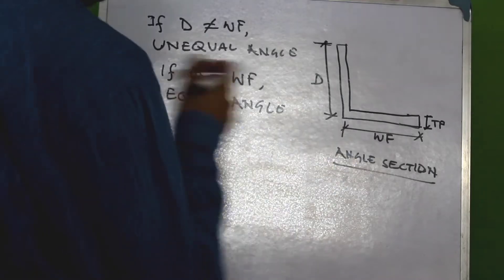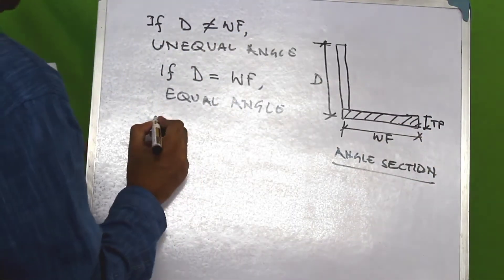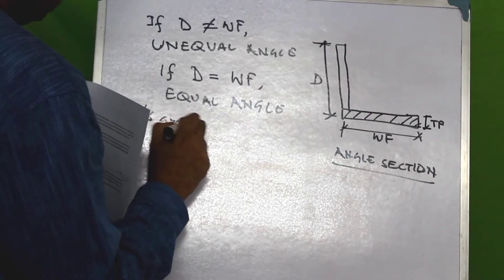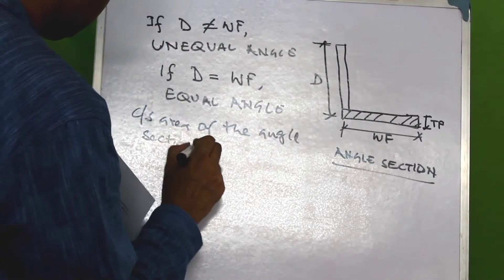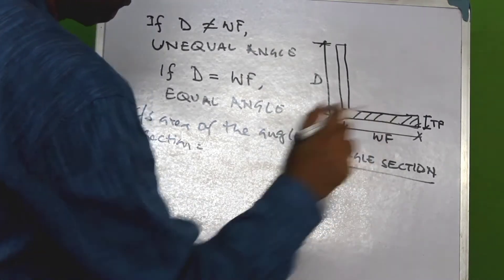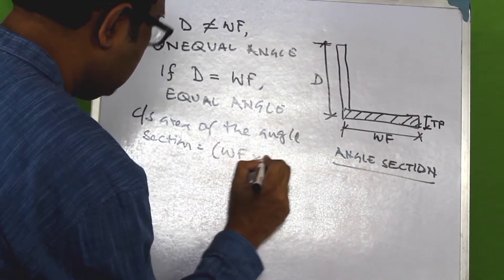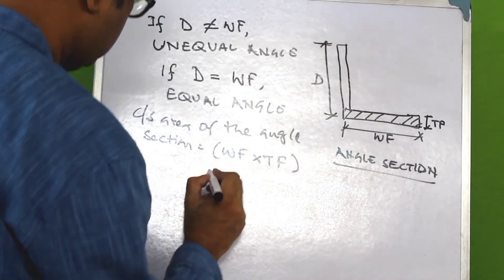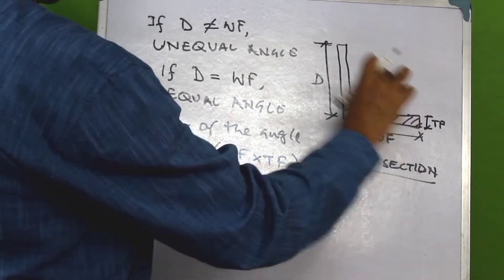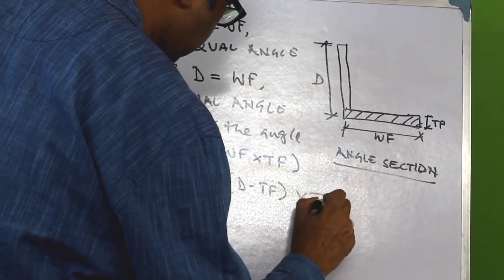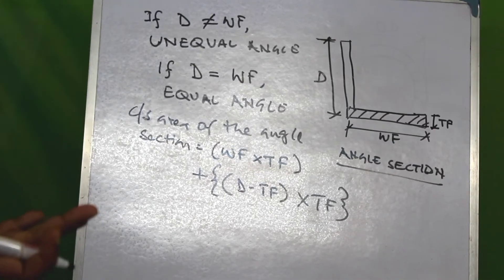Now let us find out the cross-sectional area of this angle section. The cross-sectional area will be equal to the area of the flange component plus the area of the web component. The area of one component is given by the width (WF) multiplied by the thickness, and the area of the other component is given by the total depth minus the thickness, multiplied by the thickness. This gives the cross-sectional area of an angle section.